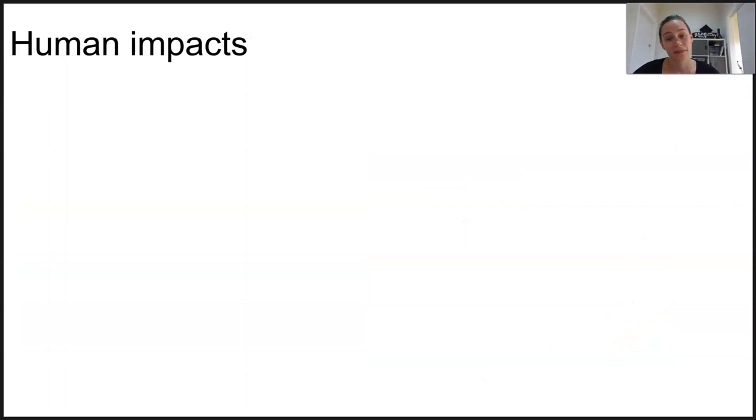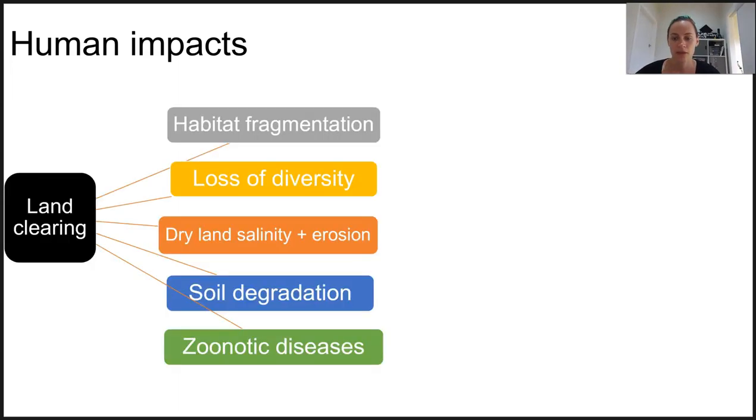I'm only going to briefly touch on some of the human impacts to our environment with the view of exploring more of these in class, and each of them has huge flow-on effects for so many elements of our ecosystem and our society. We talked about land clearing. It stems from so many other impacts like agriculture, urbanization, resource harvesting like logging and mining, and it leads to things like habitat fragmentation, loss of diversity, dry land, salinity, erosion, soil degradation, and zoonotic diseases increasing in frequency.